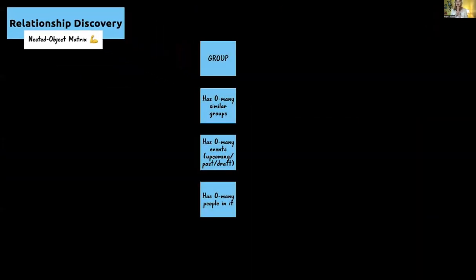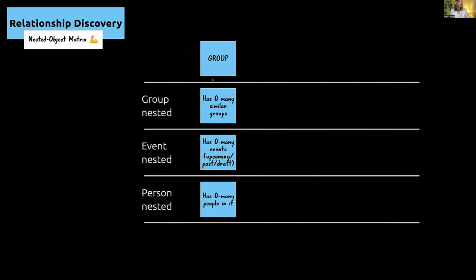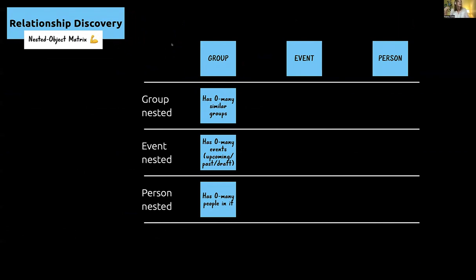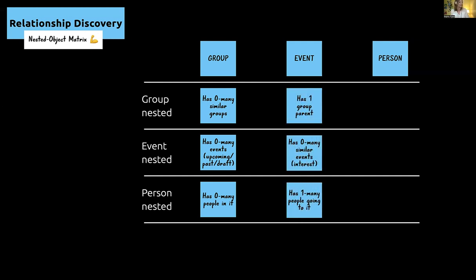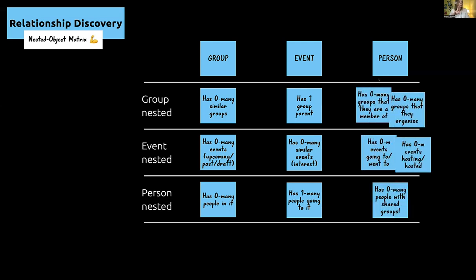Let's look at the nested object matrix using an app you're probably familiar with: Meetup. Meetup has groups, events, and people. In the nested object matrix, we take objects across the x-axis and the same objects down the y-axis, and we map those relationships using cardinality. A group has zero-to-many events — upcoming, past, and draft. A group has zero-to-many people. An event has one group parent. A person has zero-to-many groups they are a member of, and zero-to-many groups they organize.